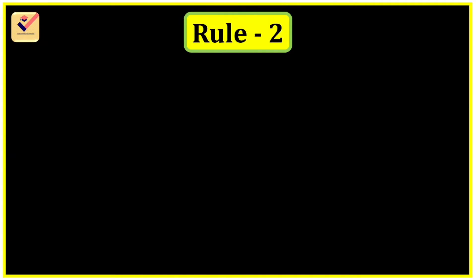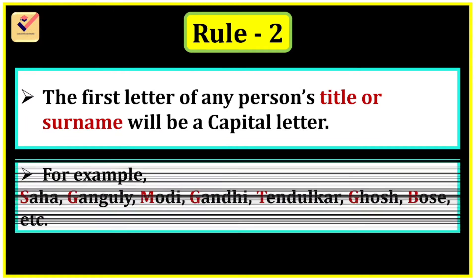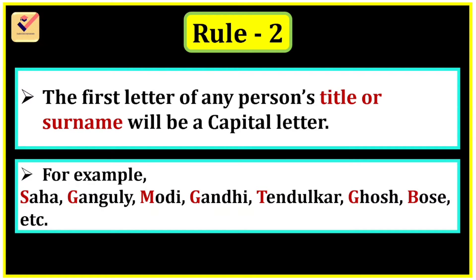Rule 2: The first letter of any person's title or surname will be a capital letter. For example: Shaha, Ganguly, Modi, Gandhi, Tendulkar, Ghosh, Bosch, etc. These are surnames.